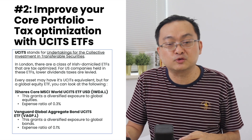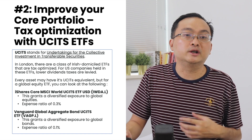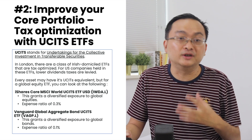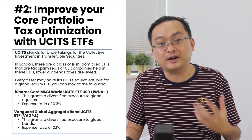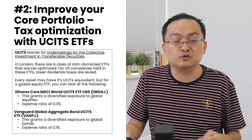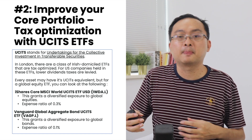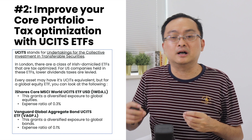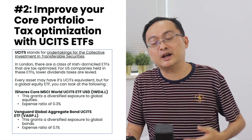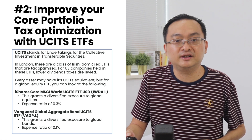The downside is that the expense ratio is going to be slightly higher when you pick up this ETF. There is also the equivalent for the Vanguard Global Aggregate Bond ETF, which also grants diversified exposure to global bonds. The expense ratio is 0.1%. For folks that want to tune your core portfolio in a more deliberate manner, you might want to go on a hunt for ETFs specifically with this UCITS designation.